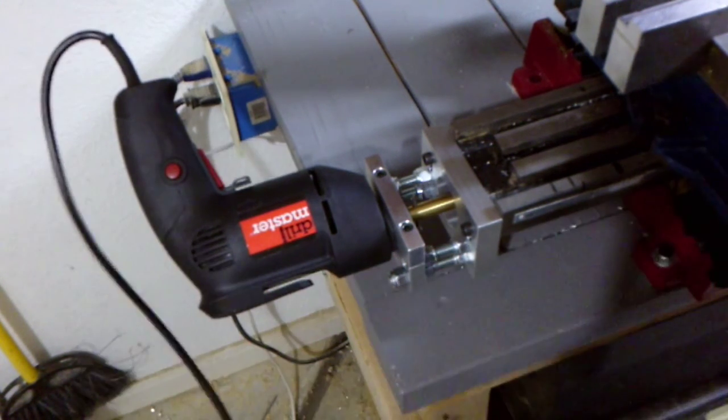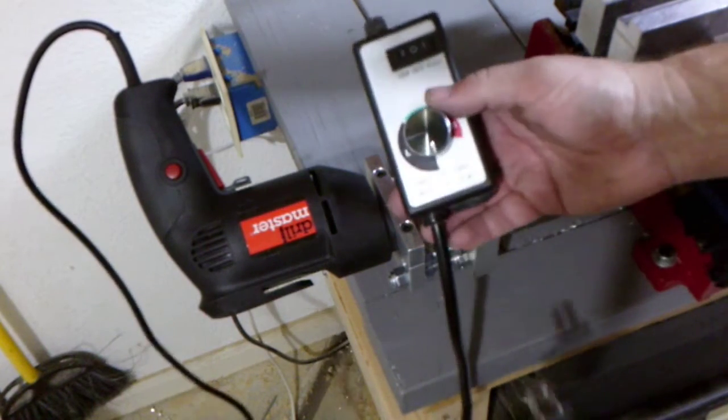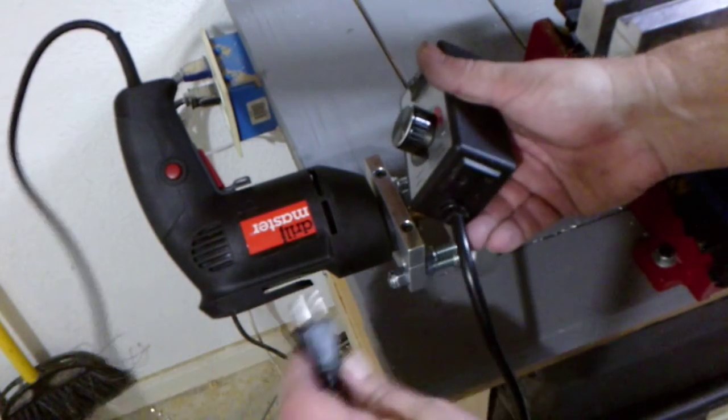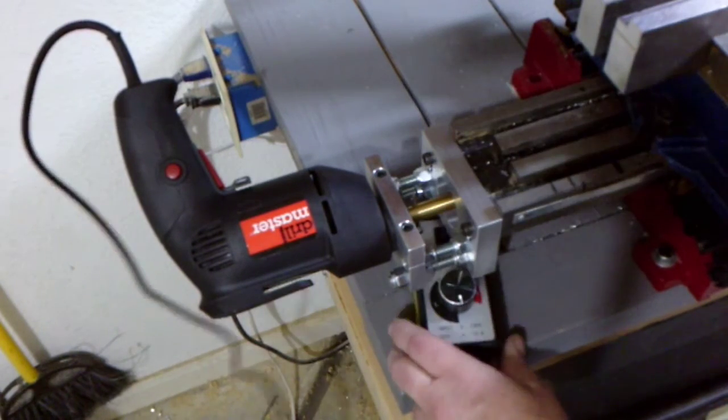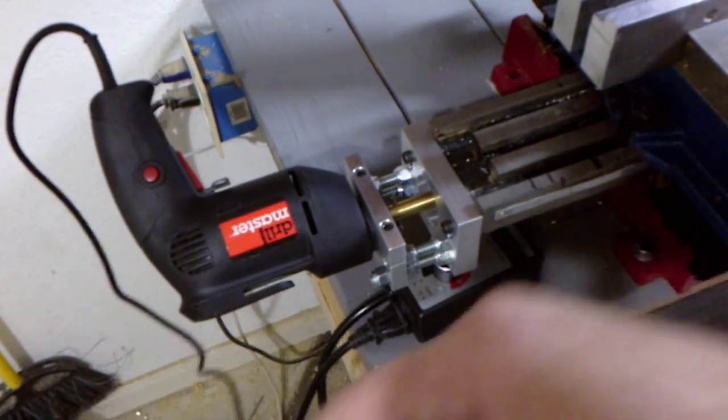To apply power, plug the drill cord into the variable speed controller. The speed controller then plugs into any outlet.